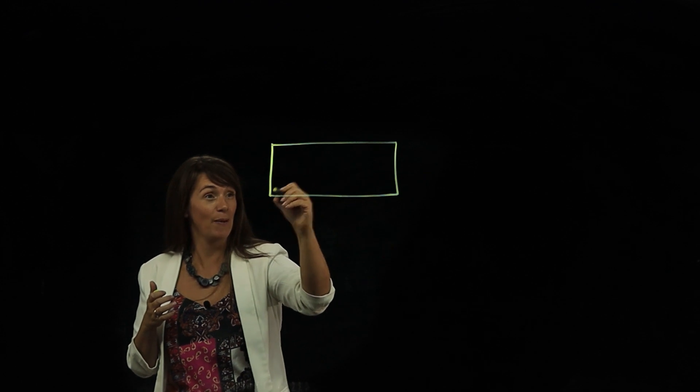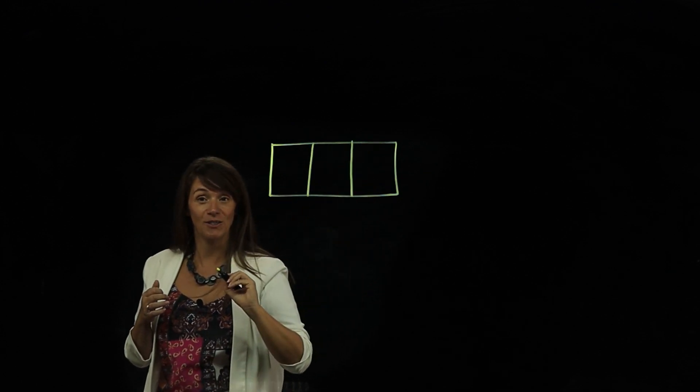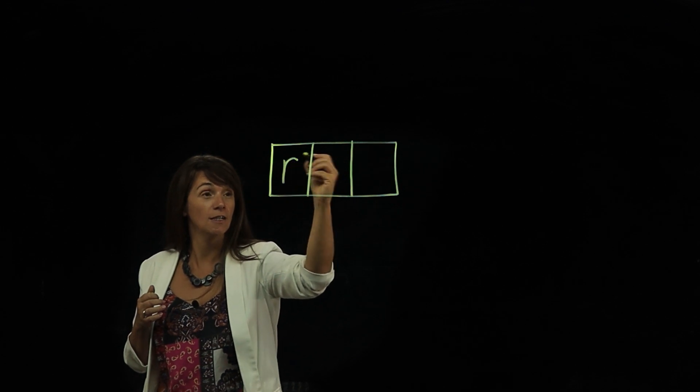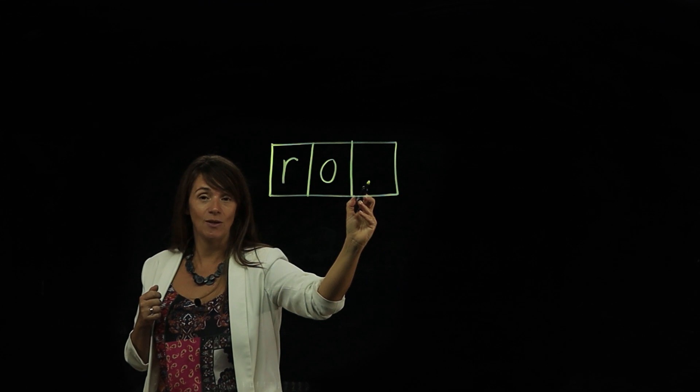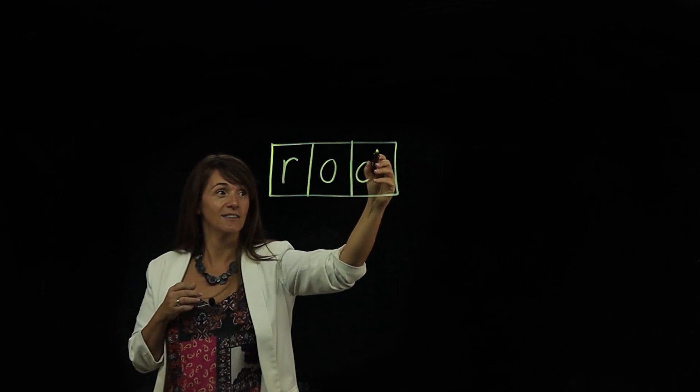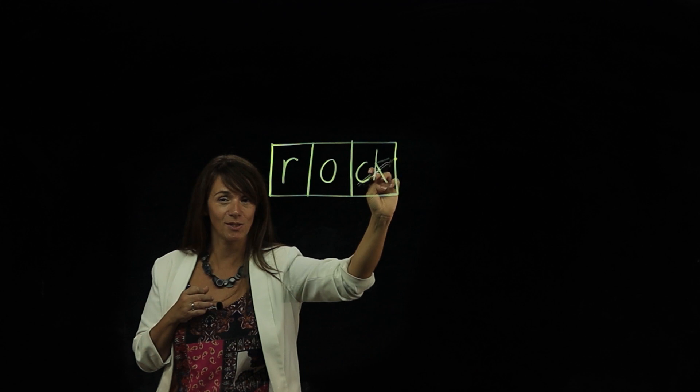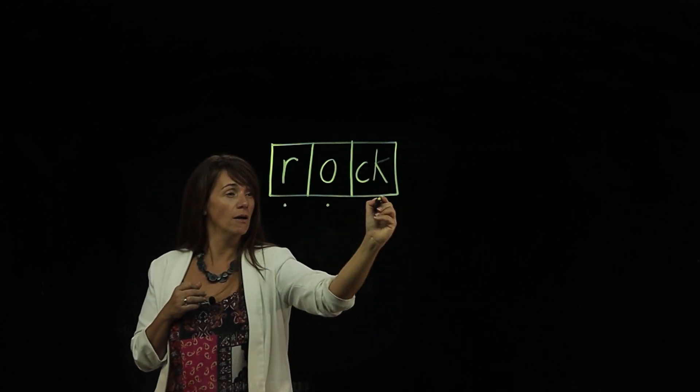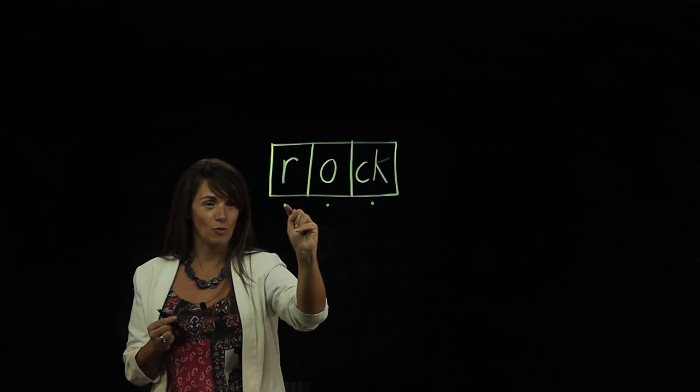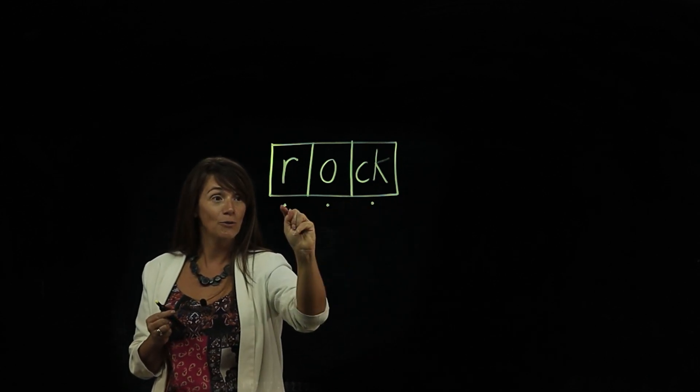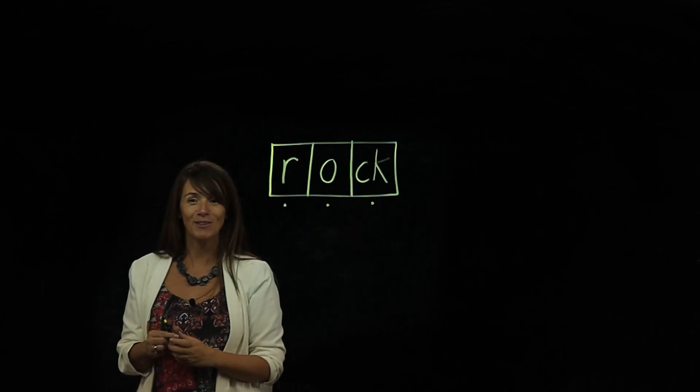Our first word is rock. How many sounds can you hear? Rock. That's right, there are three. So we're going to put three boxes to help us spell and sound out this word. Our first sound is r. Our middle sound is o. And our last sound is ck. And this has two letters, but they make one sound, don't they? So that's why they're inside one box. We've got r, o, ck. There are sound buttons, we're going to press them to help us read. Are you ready? R-o-ck. Rock. Say it faster and blend it. Rock. Well done, everybody.